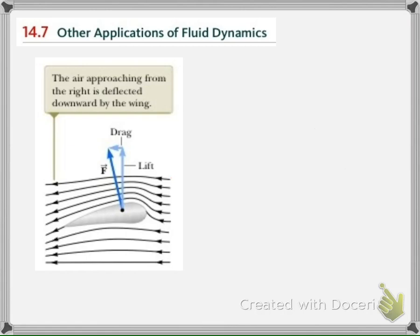The airplane wing supports the lift force to the airplane and makes the airplane fly. The principle is that the airplane wing is designed to allow the air beneath the wing to flow freely, while the air above the wing is forced in a way that the line of flow is squeezing — the line of flow is forced to come closer above the wing.